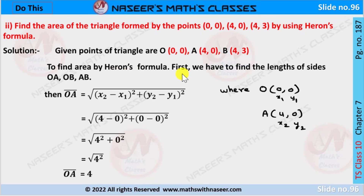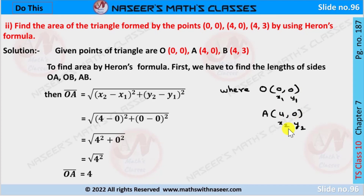To find the area by Heron's formula, first we have to find the length of the sides OA, OB, and AB. We know that the length of OA is written as the square root of (x2 minus x1) squared plus (y2 minus y1) squared. Here O(0,0) is x1,y1 and A(4,0) is x2,y2. Now we substitute these values in the formula.